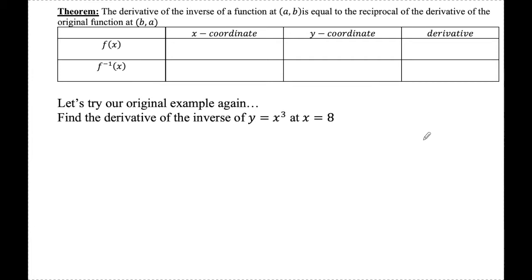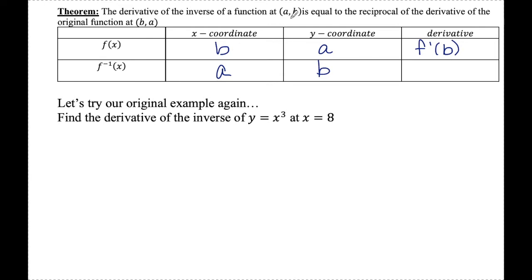This theorem is very wordy, so a table makes our life a little bit easier in pulling out the information we need. If I'm finding the derivative of the inverse at point (a,b), my inverse function has coordinates (a,b). The derivative of the inverse equals the reciprocal of the derivative of the original function at point (b,a). Those coordinates just get flip-flopped. So if I find f prime at point (b,a), the derivative of the inverse is 1 over f prime of b.